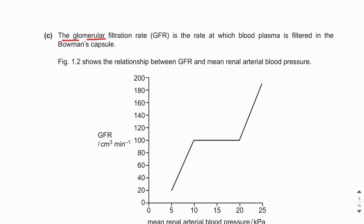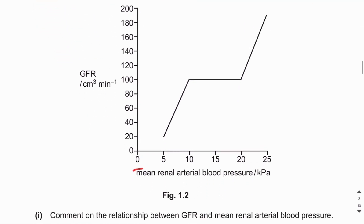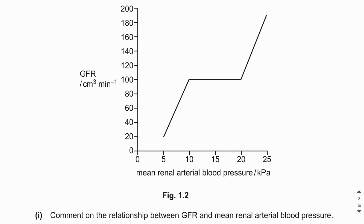The glomerular filtration rate (GFR) is the rate at which blood plasma is filtered in the Bowman's capsule. Figure 1.2 shows the relationship between GFR and the mean renal arterial blood pressure. On the x-axis is mean renal arterial blood pressure and on the y-axis is GFR.